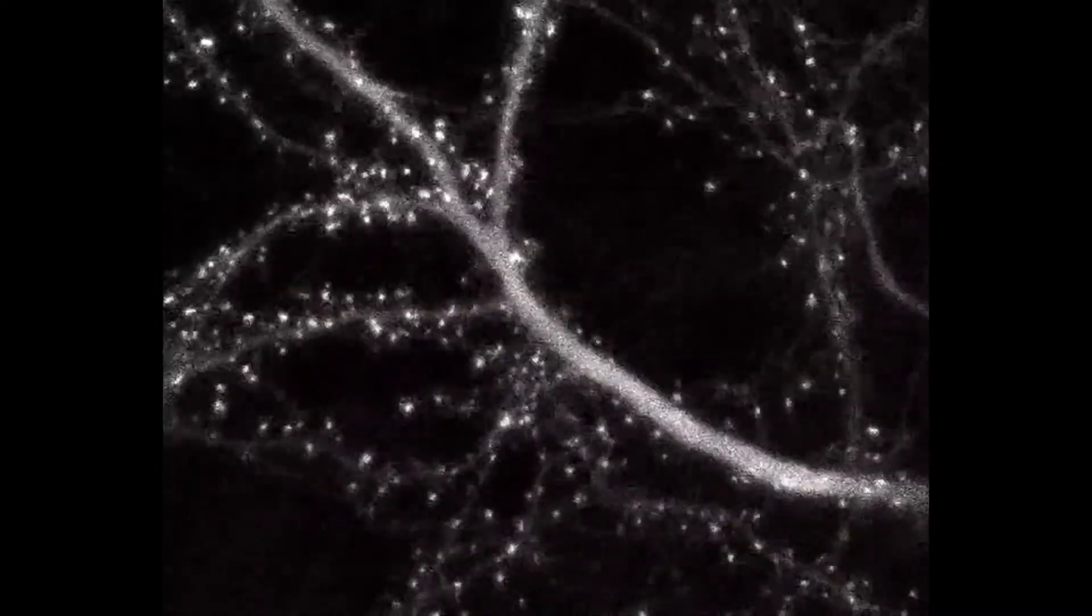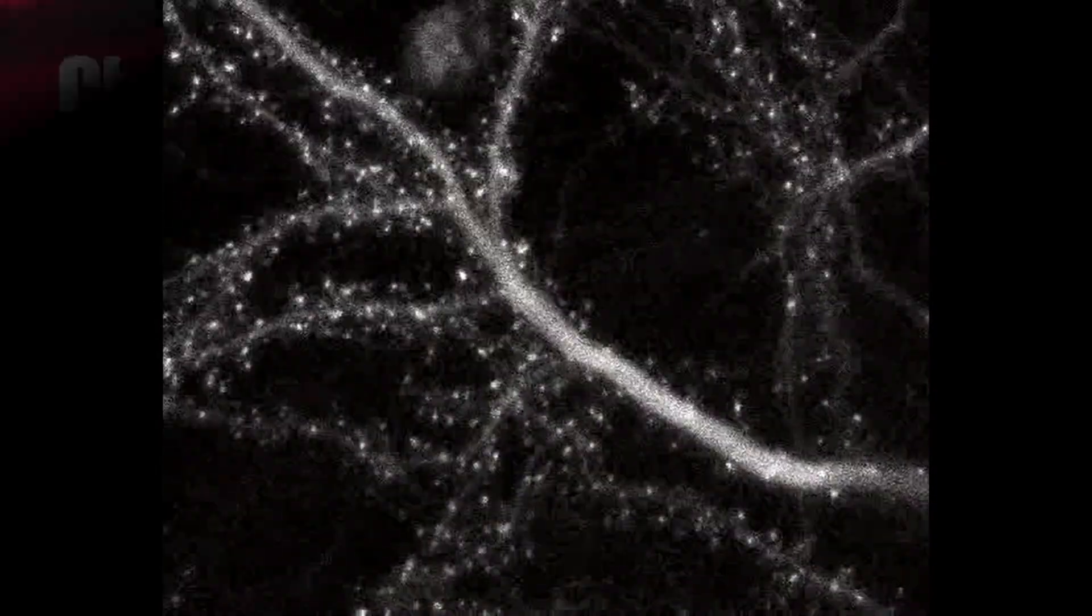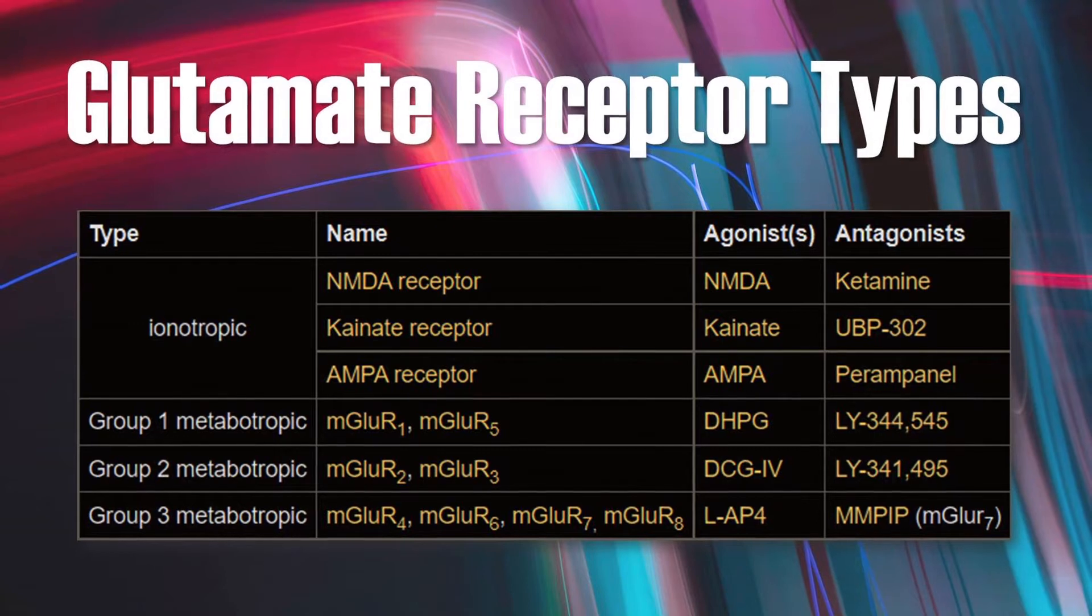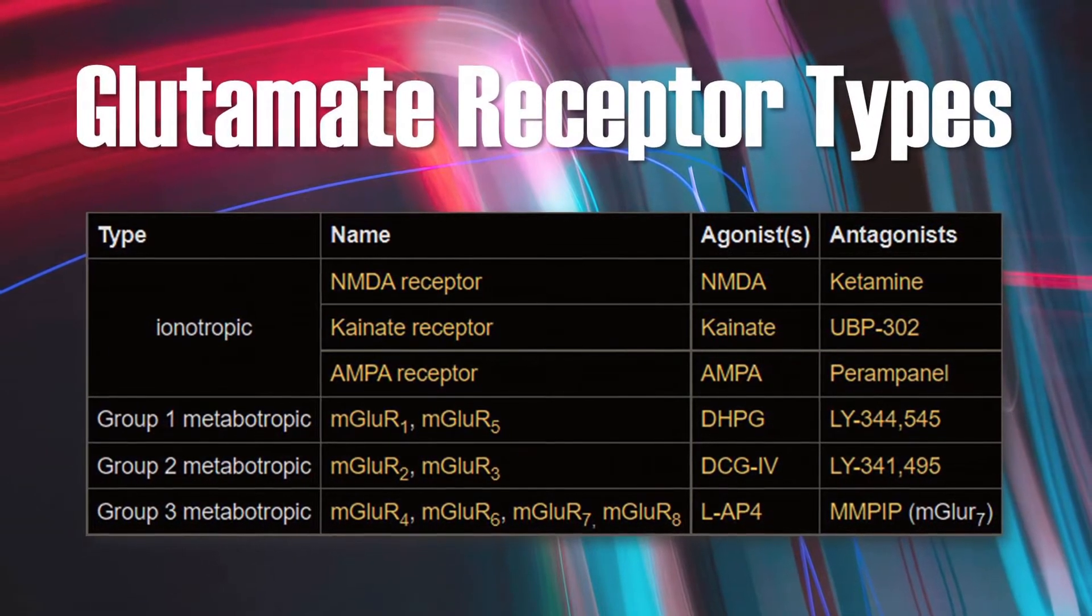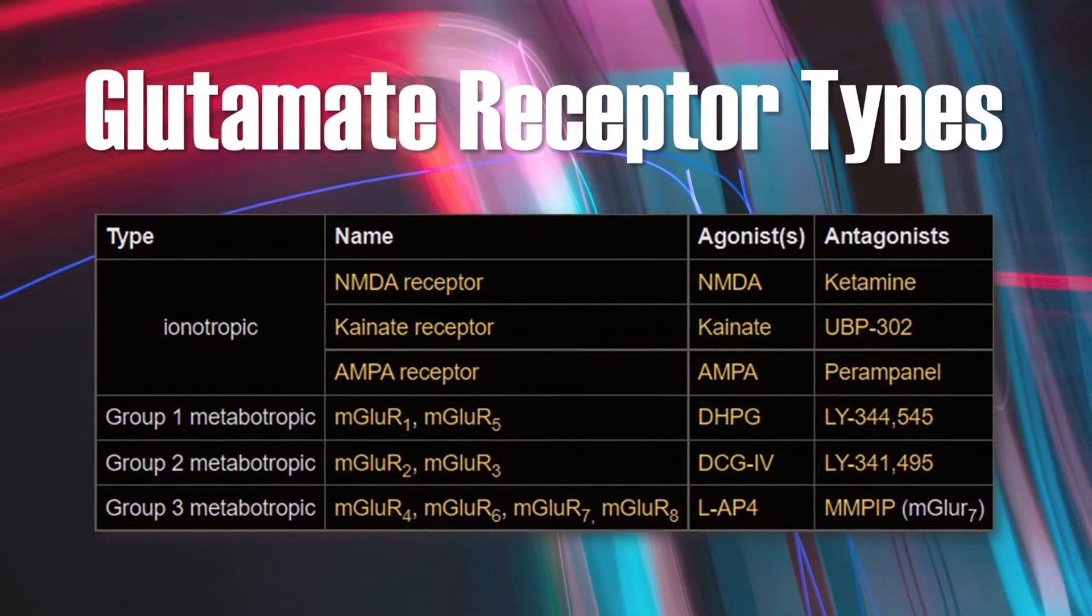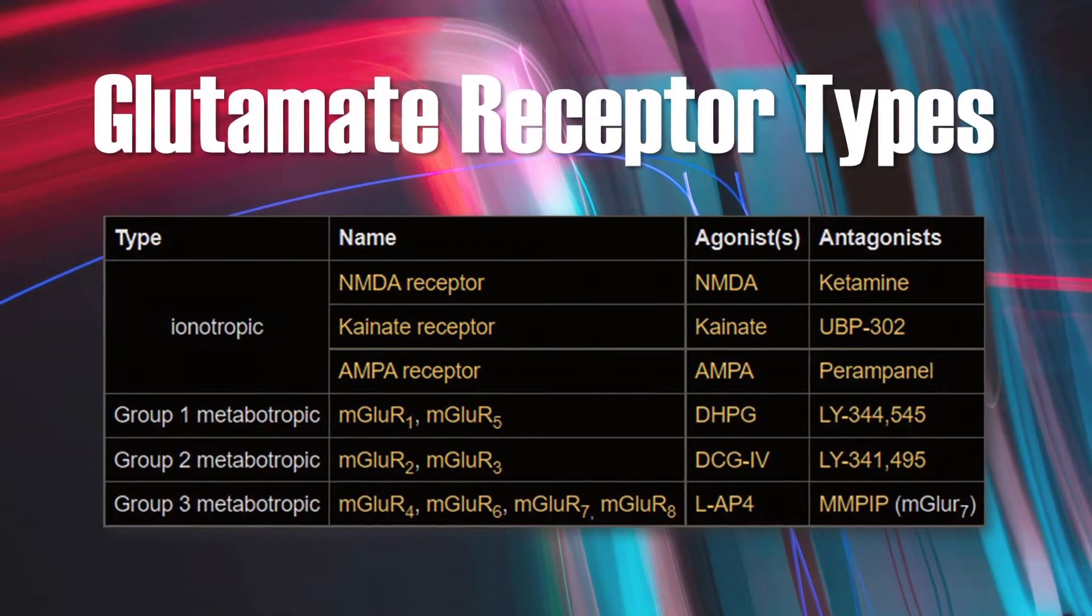So different kinds of metabotropic and ionotropic receptors can all be found in a single neuron and even in a single synapse. But in this example, they all respond to the same neurotransmitter, glutamate.